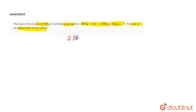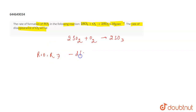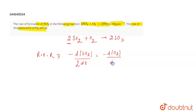We have the reaction 2SO2 + O2 → 2SO3. We write the rate of the reaction in terms of the disappearance of the reactants and appearance of the product. So it will be: −d[SO2]/dt divided by 2, equal to −d[O2]/dt, equal to +d[SO3]/dt divided by 2. This is what we have to find out.